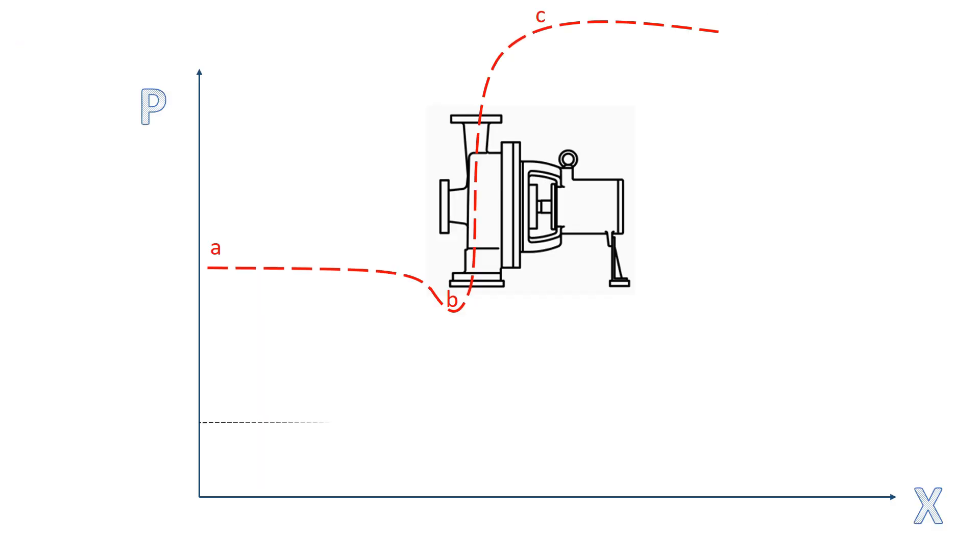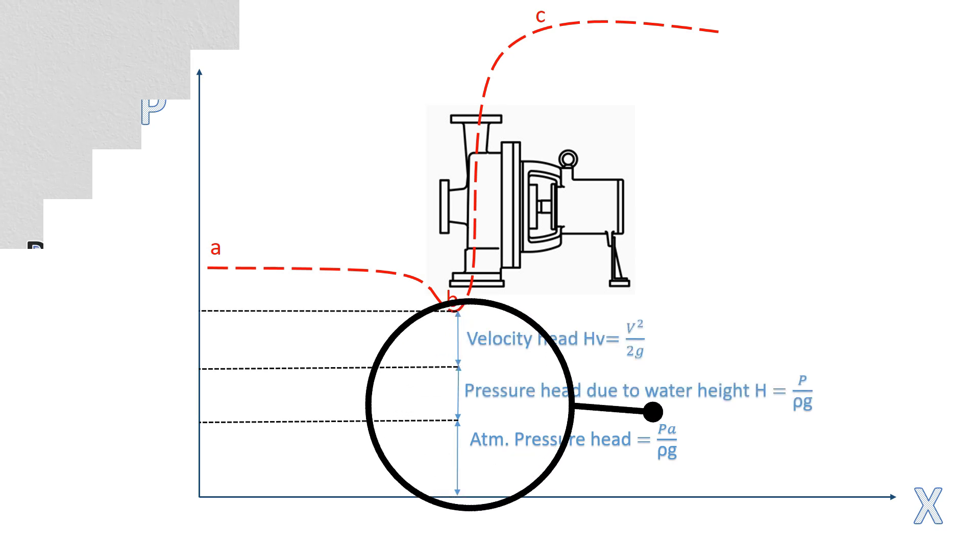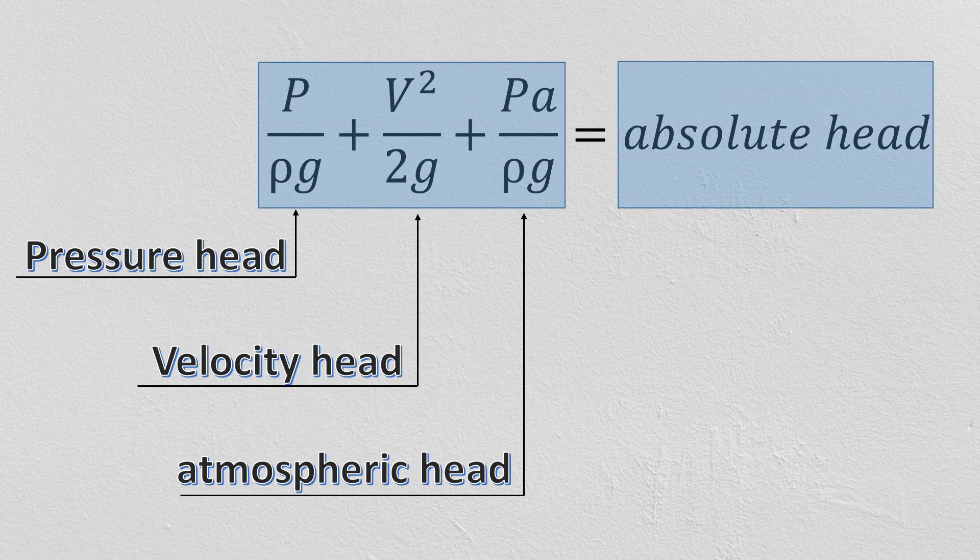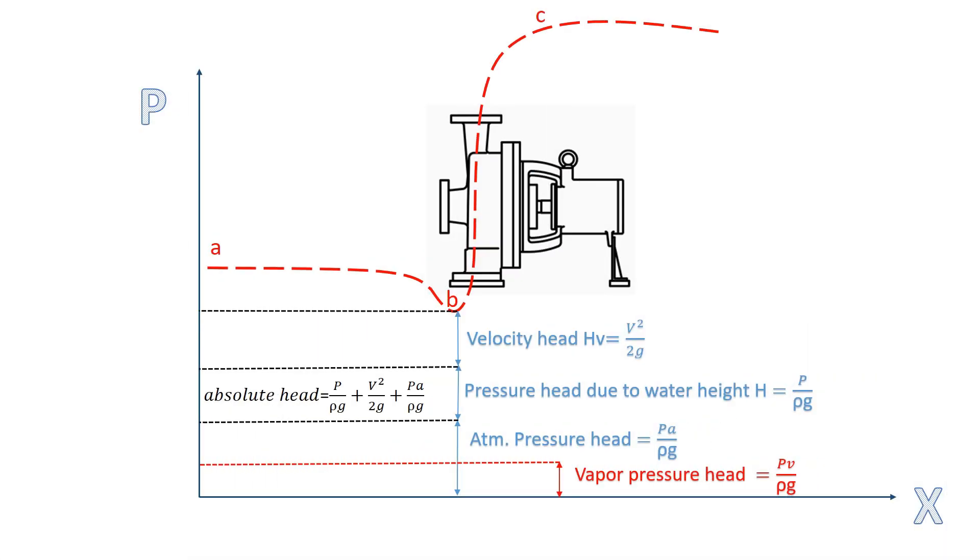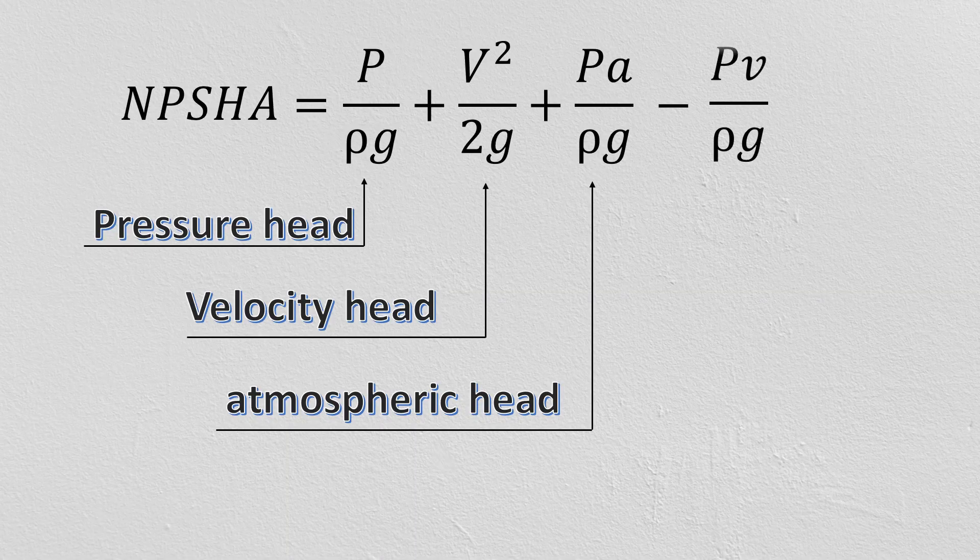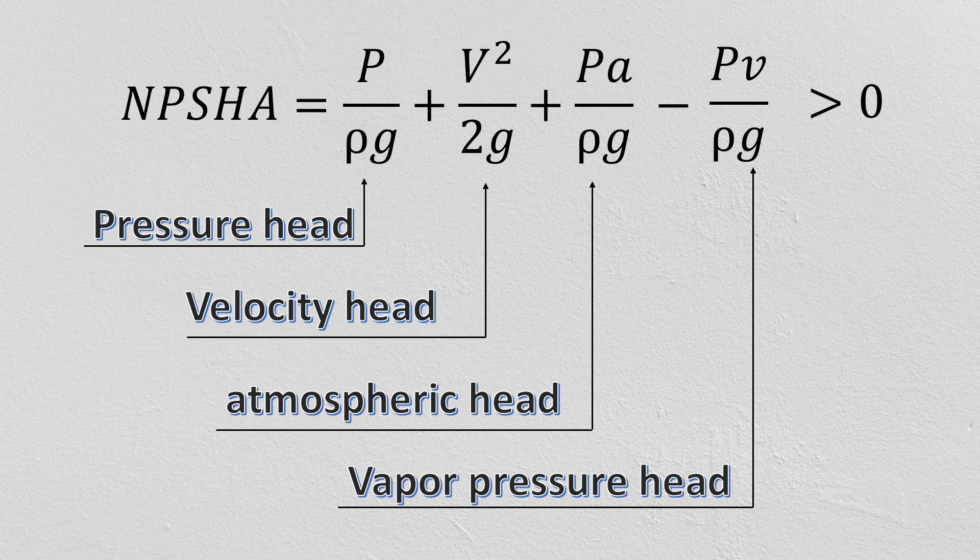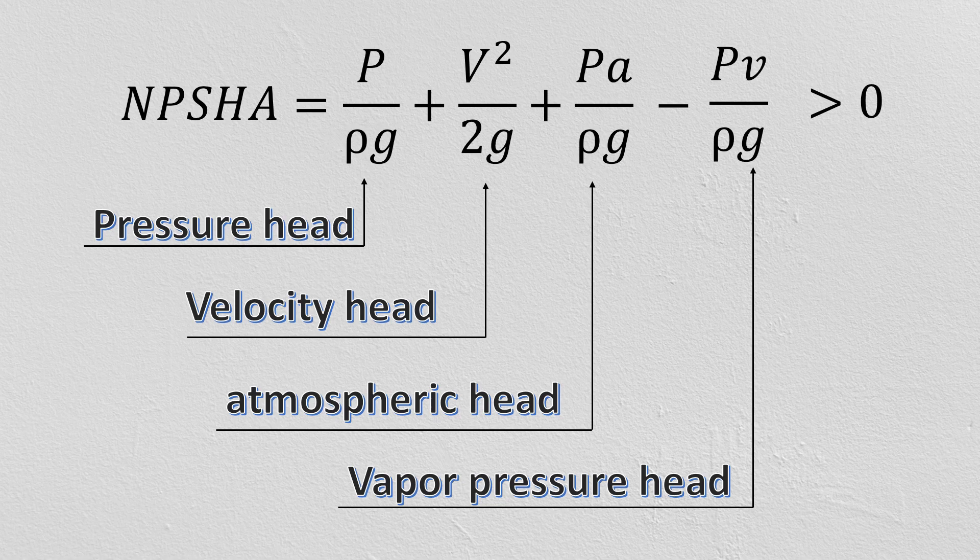As you can see in this figure, I have shown atmospheric pressure head, static head due to water column h, and velocity head. If we add all these terms, we will get the absolute head at pump inlet. To avoid cavitation, this absolute head at pump inlet must be greater than vapour pressure. So if we subtract vapour pressure from this absolute inlet head, it must be always a positive term and known as net positive suction head available. Till now we have understood what is net positive suction head available.